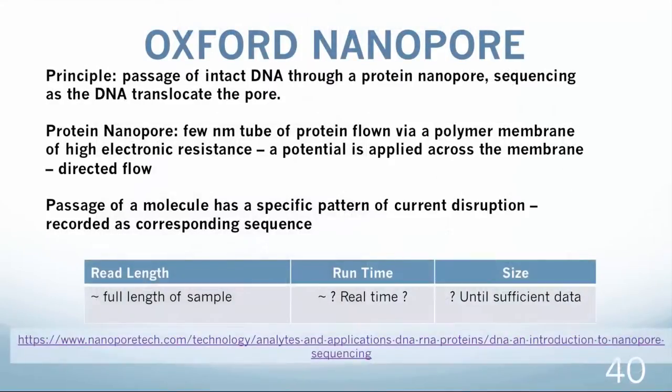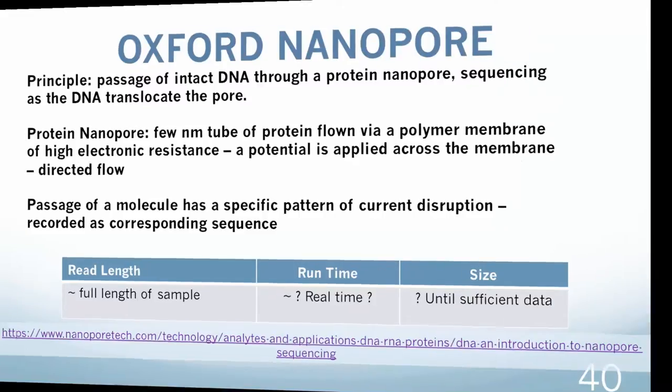One of the most promising sequencing technologies today is the Oxford Nanopore, also called strand sequencing. The two advertised systems are MinION and GridION. General principles consist of passage of intact DNA through a tubular nanopore structure and sequencing of DNA as it translocates through the pore.